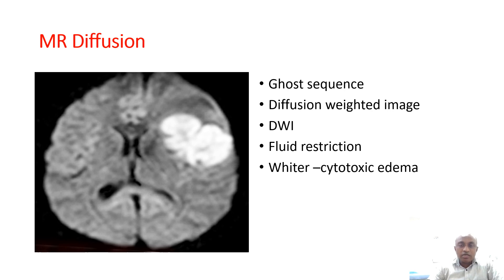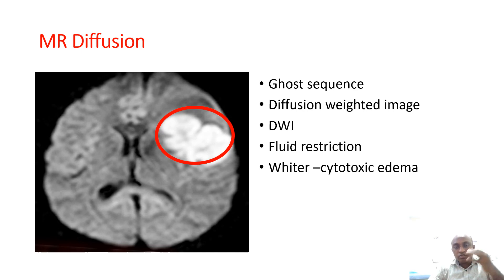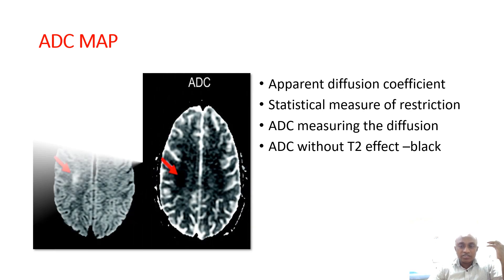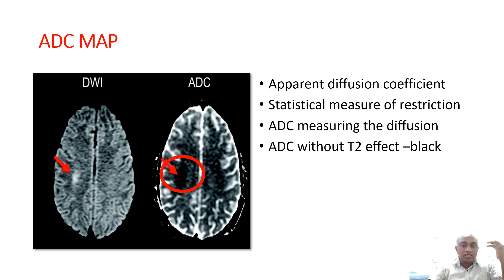MR Diffusion is the image used to see fluid restriction in part of a lesion or part of the brain. It looks like a ghost appearance — it is called a ghost sequence. In diffusion weighted imaging, there is fluid restriction and the area looks hyperintense and white. To measure the diffusion, we need an ADC map — apparent diffusion coefficient — which is a statistical measure of restriction. In DWI it looks white; in the ADC map it looks black.